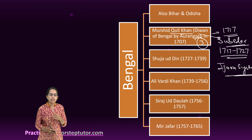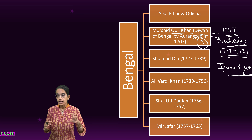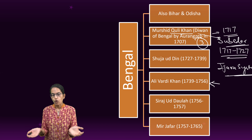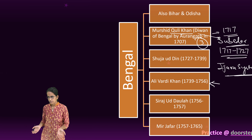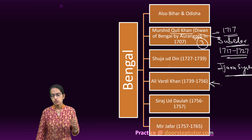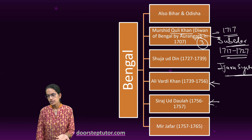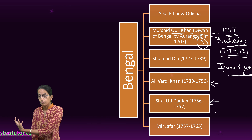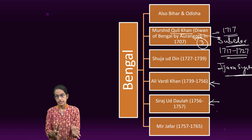After Sujahuddin, we had Ali Vardi Khan, Sirajuddaula and Mir Jafar. Ali Vardi Khan's period was one of the best periods of the Bengal state with numerous developments. After him came Sirajuddaula. During the time of Sirajuddaula, the Battle of Plassey took place, and it was then that the East India Company started to shift its role from being just a trader to having a rule in India.